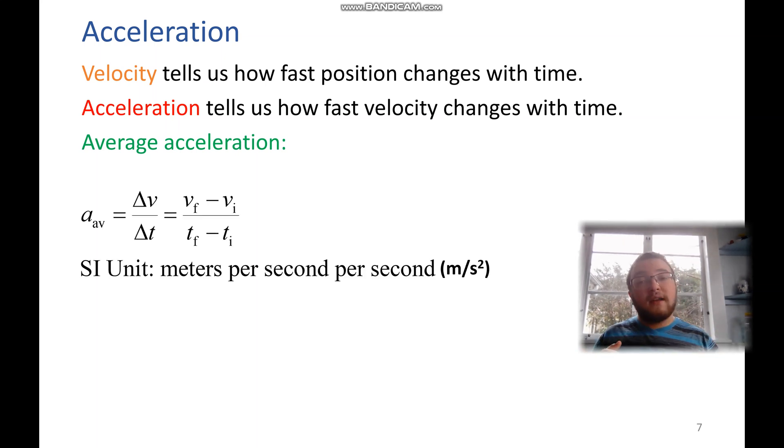If average velocity is change in position over time, average acceleration is change in velocity over time. So we have the final velocity minus initial velocity over the amount of time that it took. And since in the numerator, we have the meter per second, and in the denominator, we have the second, we divide by seconds again, and we get the meter per second per second, or meter per second squared.